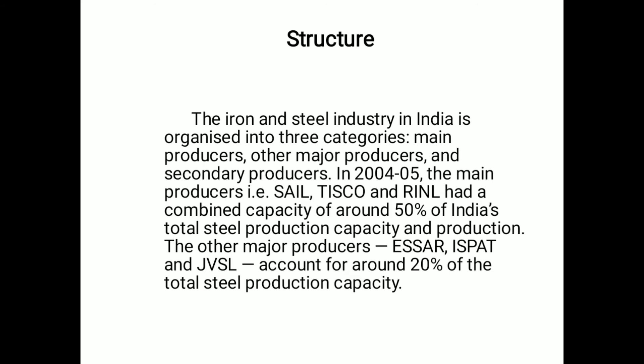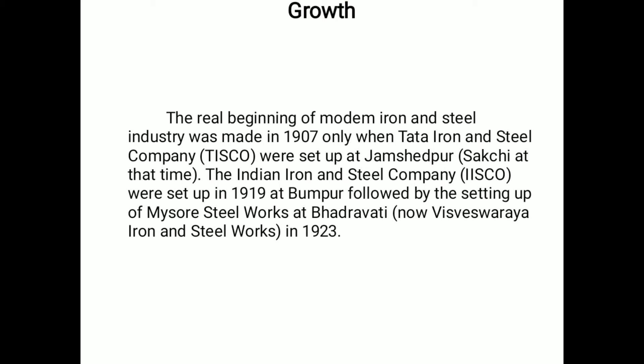The other major producers — SRIPAT and JVSL — accounted for about 20 percent of total steel production capacity. The real beginning of the modern iron and steel industry was made in 1907 when Tata Iron and Steel Company (TISCO) was set up at Jamshedpur. The Indian Iron and Steel Company (IISCO) was set up in 1919 at Burnpur, followed by the setting up of Mysore Steel Works at Bhadravati, later renamed Visvesvaraya Iron and Steel Works in 1923.